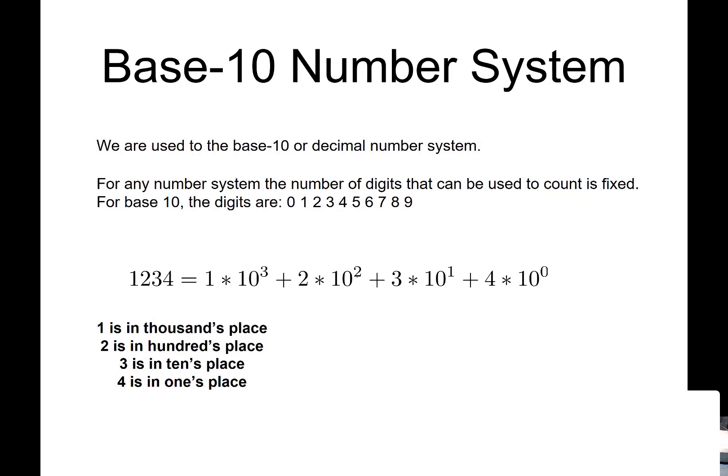And so for any number system, the number of digits that you can count is fixed. So for instance, with base 10, the digits that we're limited to are 0 through 9. So we can use 0 through 9, so we basically have 10 digits that we can use to represent every number. So that's why it's base 10.